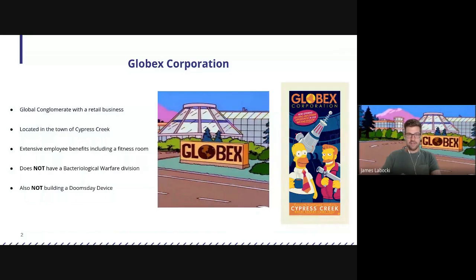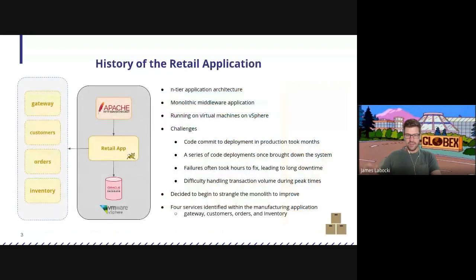We are a global conglomerate. We have a retail business that is one of our key businesses to our overall strategy as a company. I want to tell you a little bit about the history of one of the applications inside of our retail business. There's been a group of folks from the conveyor community that wanted to hear about our history of our retail application and where we are today. I'm excited to invite them into the meeting and tell them the history of this and see what they can do to help me modernize this application.